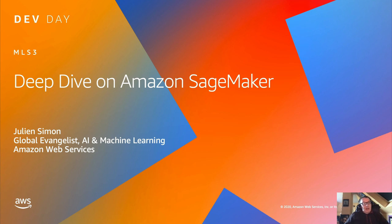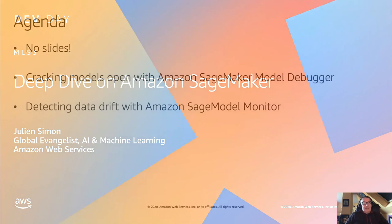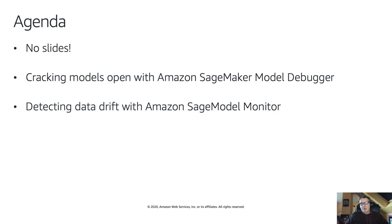In this session I'm going to dive even deeper on SageMaker — this is actually zero slides or almost. We're going to talk about Amazon SageMaker Model Debugger and how it helps inspecting what's going on during model training, and then we'll look at Amazon SageMaker Model Monitor which helps you find data quality and prediction quality issues once your models have been deployed.